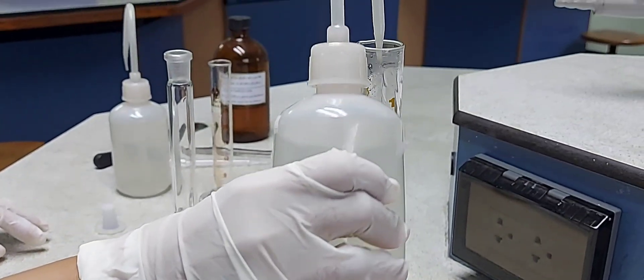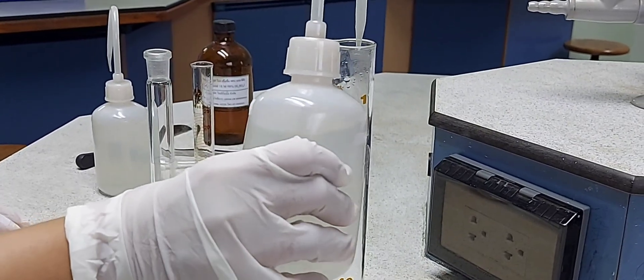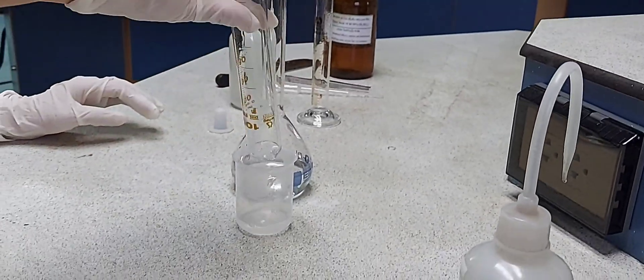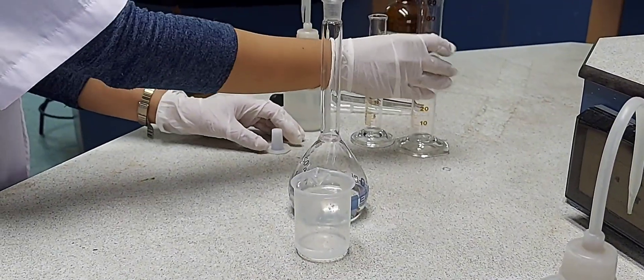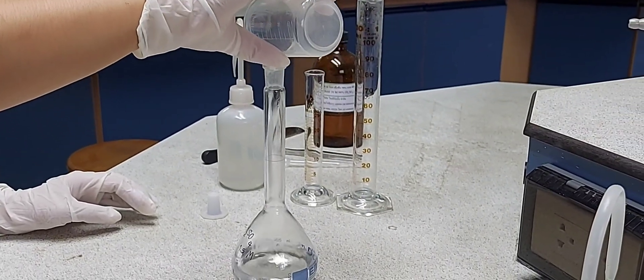Rinse the sides of the measuring cylinder with distilled water and add it to the beaker. Rinse the sides of the beaker and then add it to the graduated flask.